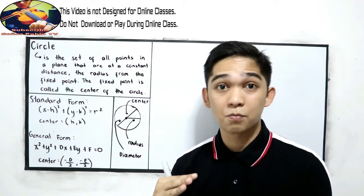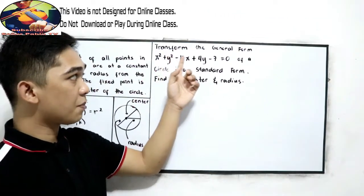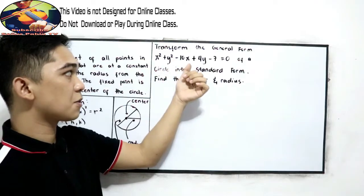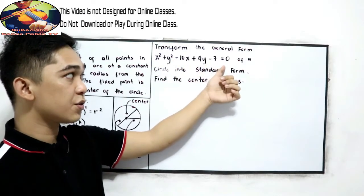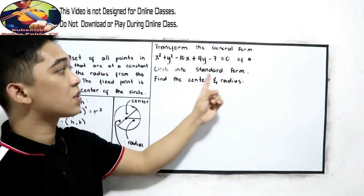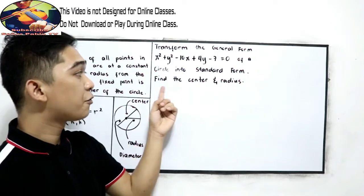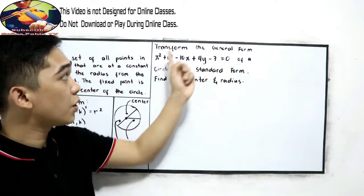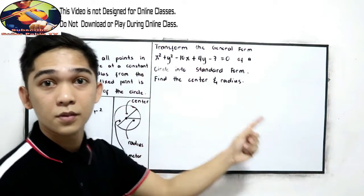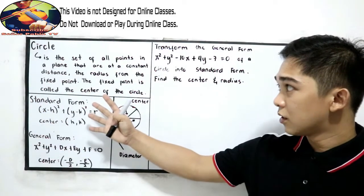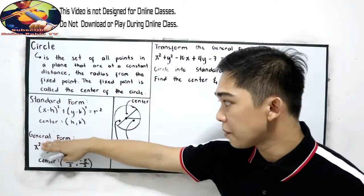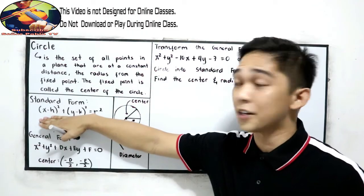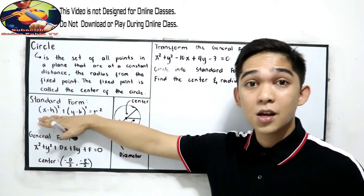Let's have the following example. Transform the general form x squared plus y squared minus 10x plus 4y minus 7 equals 0 of a circle into standard form. Find the center and the radius. We're going to transform from general form into standard form, then find the radius and the center.